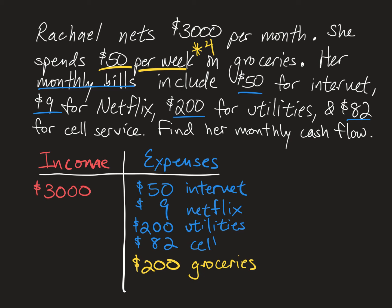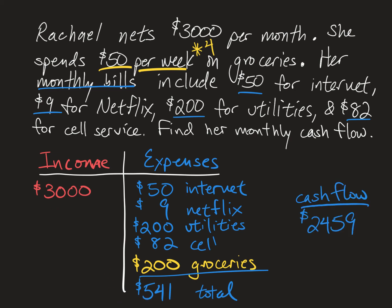So we have the mini budget set up. The monthly cash flow is simply the total income minus the total expenses. The total expenses come to $541. So $3,000 minus $541 leaves you with a monthly cash flow of $2,459.